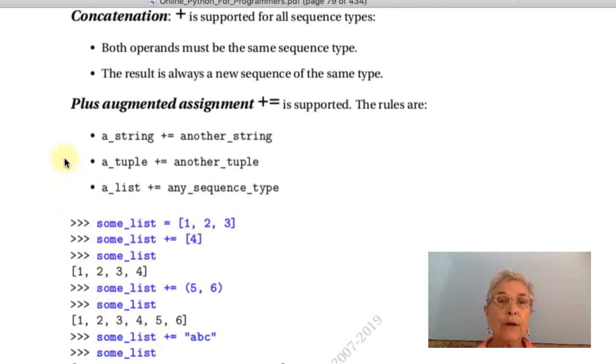We are looking at what all three sequences have in common. Here is something else they have in common: concatenation. To concatenate, both sides of the plus sign must have the same sequence type, and the result is always a new sequence and the same type as the operand of the plus sign.